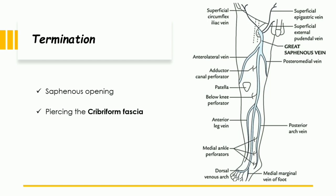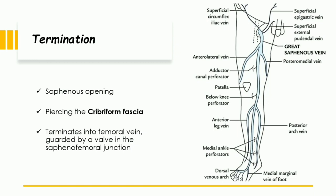There is one valve present at the saphenofemoral junction which ensures that blood flows only from the subvenous vein to the femoral vein. If there is any problem associated with this valve, there can be accumulation of blood in the superficial vein. This is the course of the subvenous vein — originating from the dorsal venous arch and ending in the femoral vein, passing through the subvenous opening.